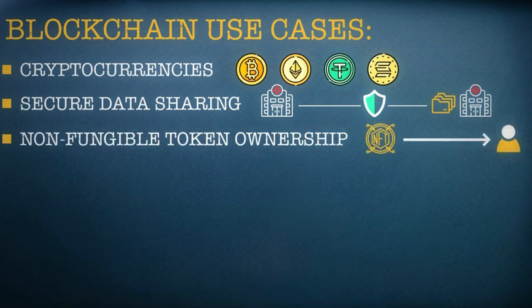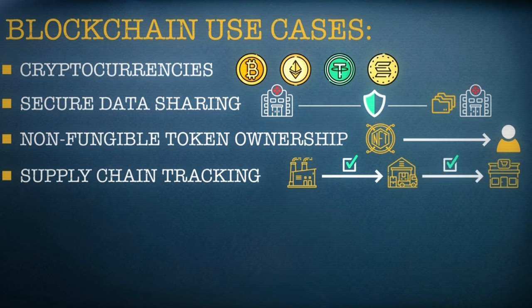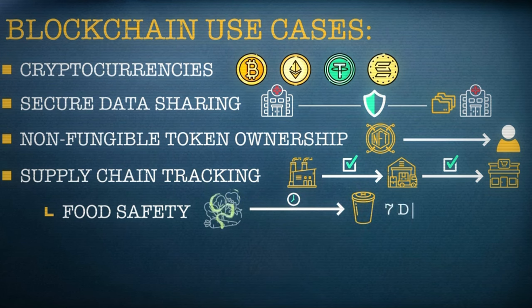Blockchains can also shake up supply chains, keeping track of how items are produced every step of the way. This can be vastly more efficient and safer than old-fashioned methods. Food safety is a good example. There have been incidents where vegetables have been contaminated, meaning they need to be recalled as fast as possible. Before blockchain existed, this process could take up to seven days, but now it's been slashed to just two seconds.